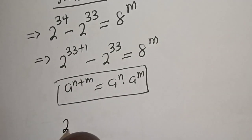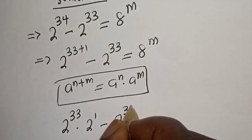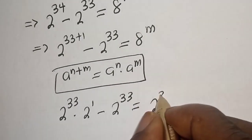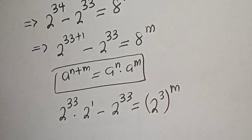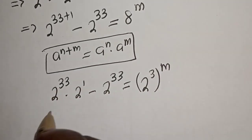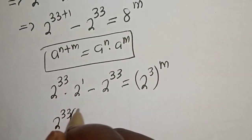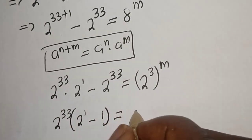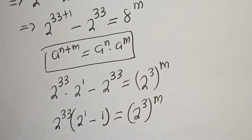So this can be written as 2 raised to power 33 multiplied by 2 raised to power 1, minus 2 raised to power 33, is equal to 8 raised to power m. Now 2 raised to power 33 is common here. Factor out 2 raised to power 33: bracket 2 raised to power 1 minus 1, is equal to 2 raised to power 33 raised to power m.